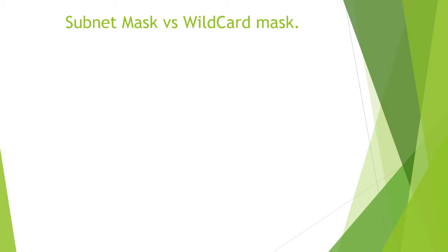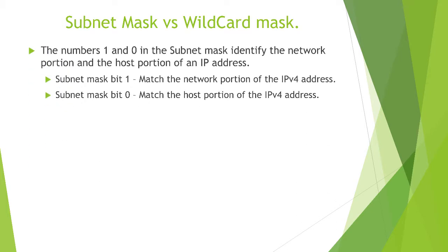So how does a subnet mask and a wildcard mask compare? With the subnet mask, if you remember, the subnet mask is made up of all ones and zeros. We use the subnet mask to determine the network portion of a host address. Wherever the ones are, that is our network. Wherever the zeros are, those are our hosts. So with a subnet mask, wherever we see a one, we know that we must match the network portion of that IP address, and wherever we see zeros, that matches the host portion.